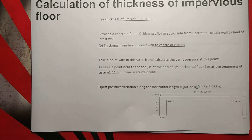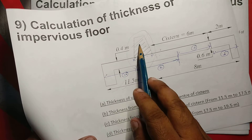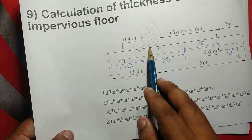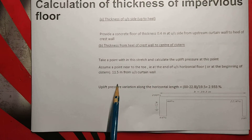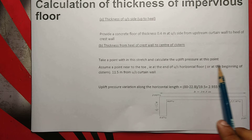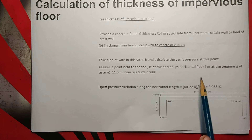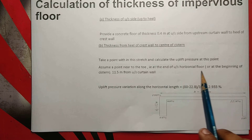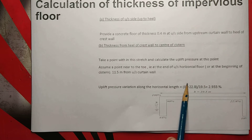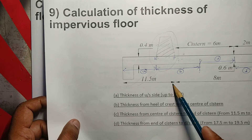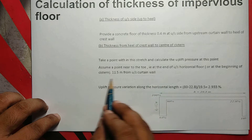The center of the system is a critical point. The critical point is the toe heel. Because the heel is the top and toe heel — it is not the same, because it is having an additional force from the crust wall. That is the toe heel. Take a point within the stretch and calculate the pressure. Assume a point near to the toe — that is the end of the upstream horizontal floor. The distance of the toe heel is 2 meters.